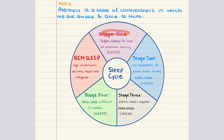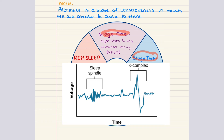As you fall more deeply asleep, you enter stage two. The EEG shows theta waves along with sleep spindles and K-complexes, which characterize this stage.